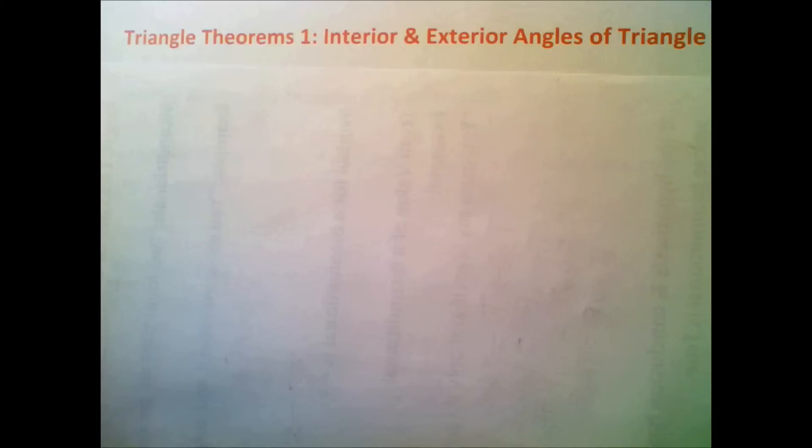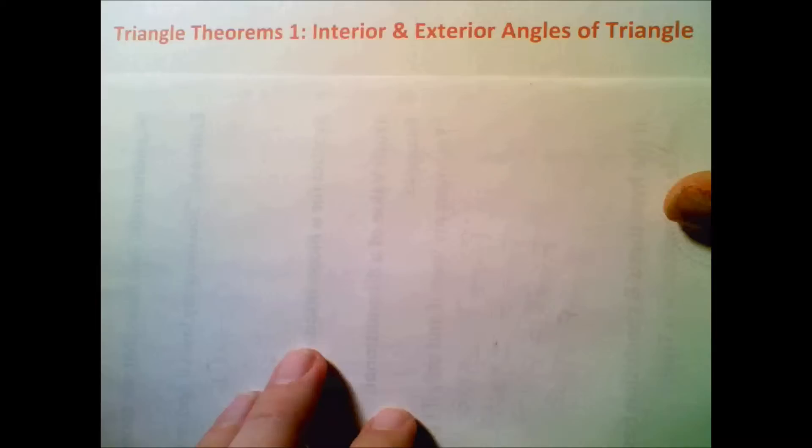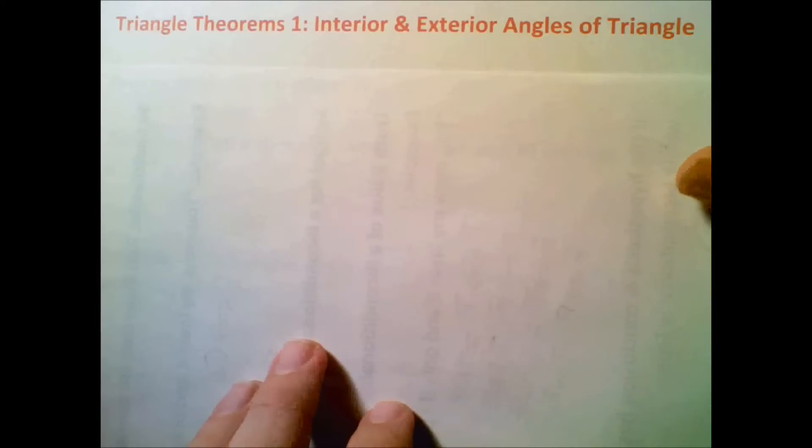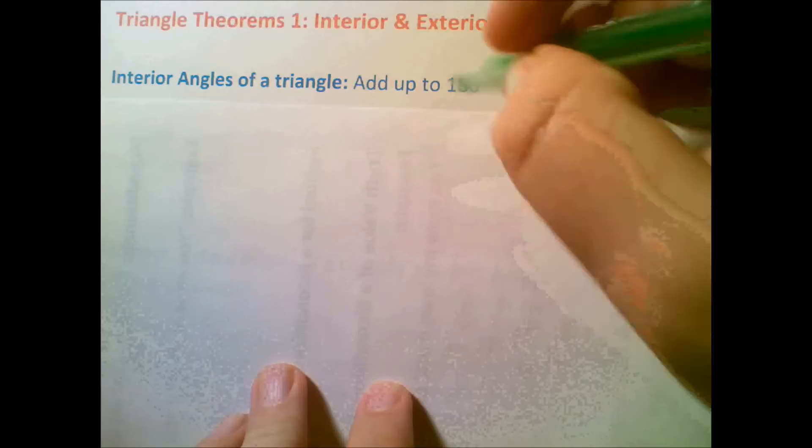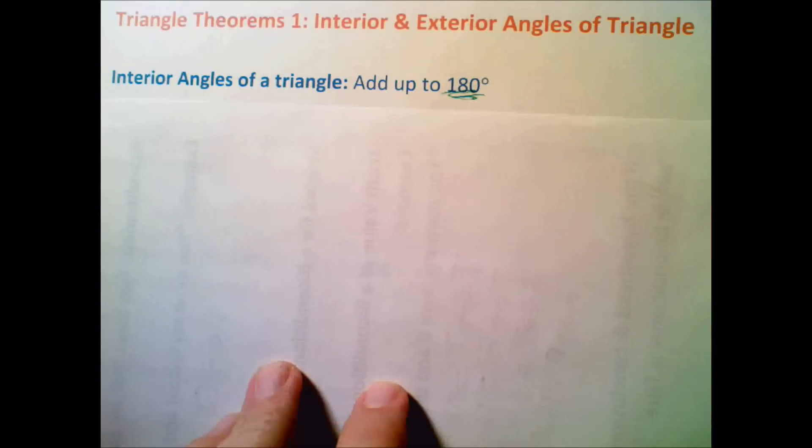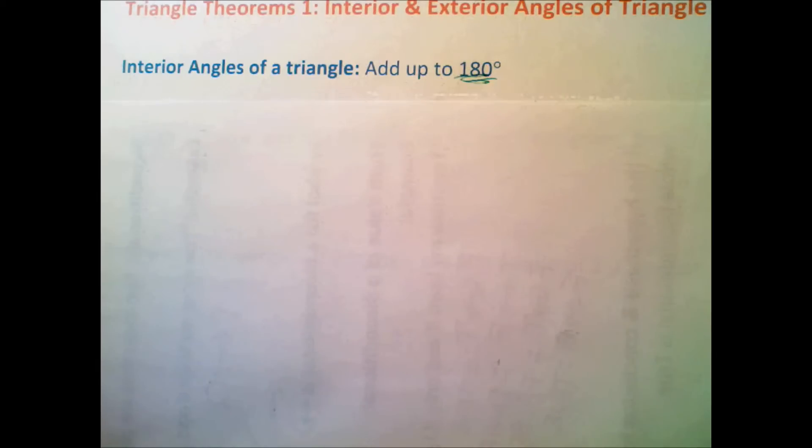Today's video is going to be on triangle theorems, interior and exterior angles of a triangle. Basically, we're going to be talking about the inside and the outside angles that are in a triangle. First thing, the interior angles of a triangle add up to 180 degrees. Probably have heard of this theorem before. So one thing we need to do is basically take all the angles of a triangle and add them up to 180 degrees.